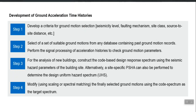In this method we apply the ground acceleration history to our computer model. We must first select a few ground motions from past recorded data, and that selection should be based on a consistent and realistic criteria which should match with the seismicity level, faulting mechanism expected at our site, site class, and source-to-site distance. These are the important parameters you should consider while selecting past ground motions for dynamic analysis.